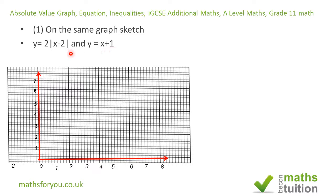To start off with, I've plotted the graph of Y equals absolute value of (X minus 2). That gives us the graph of Y equals X minus 2 on one side, and Y equals 2 minus X on the other side. Together, these two make up the graph of Y equals absolute value of (X minus 2).